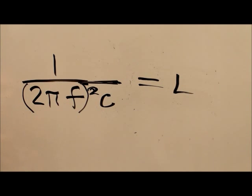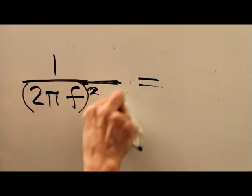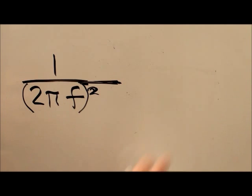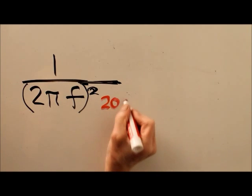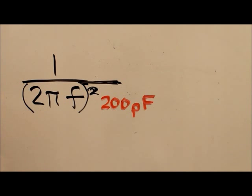So here's a practice problem for you. Suppose that you have a capacitor that will tune from zero to 365 picofarads. 200 picofarads is about the middle of the range. You want to know...